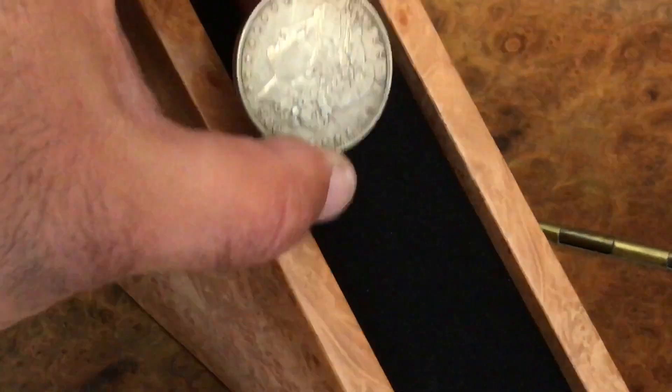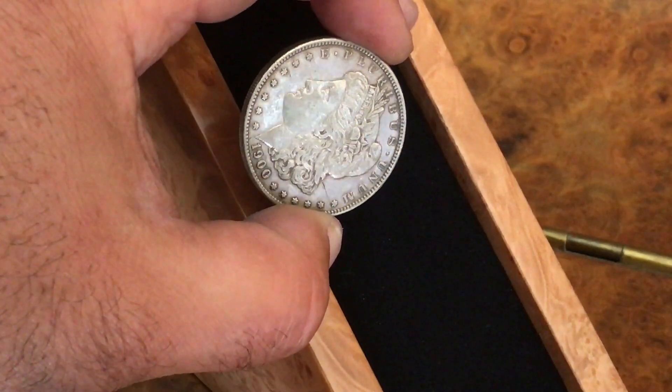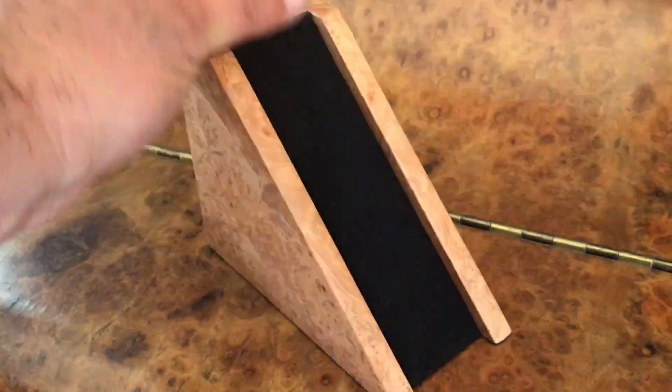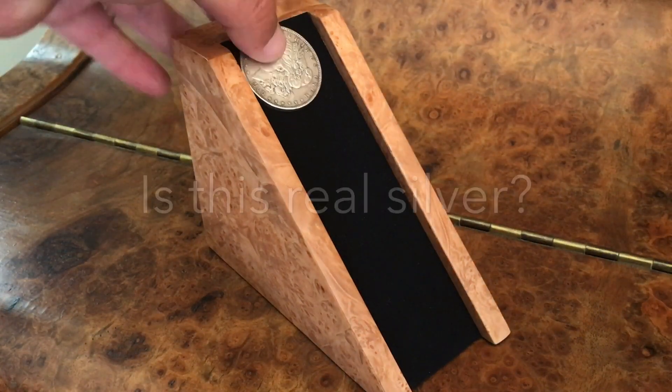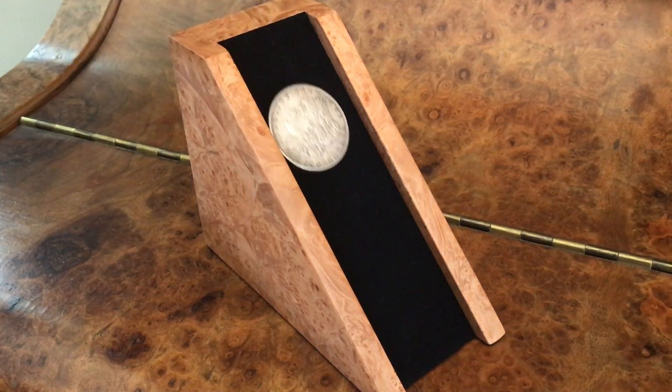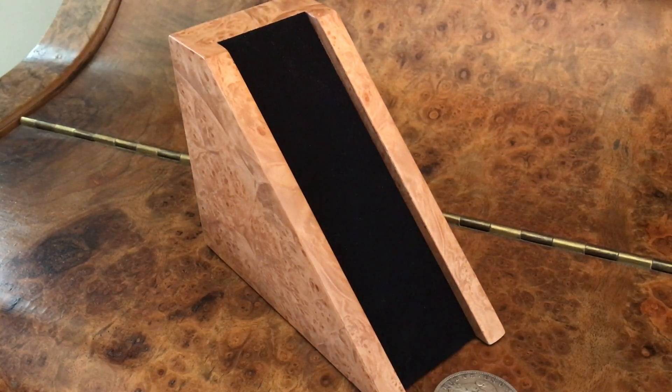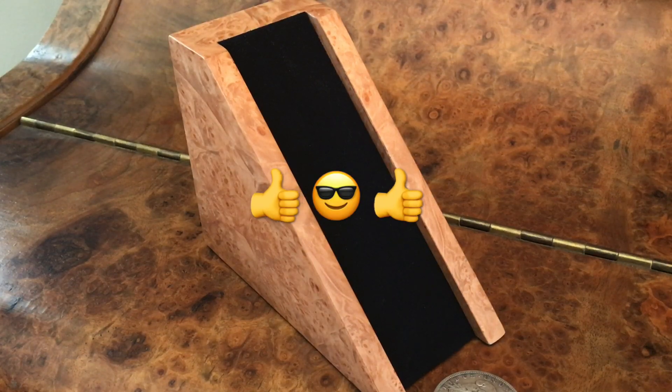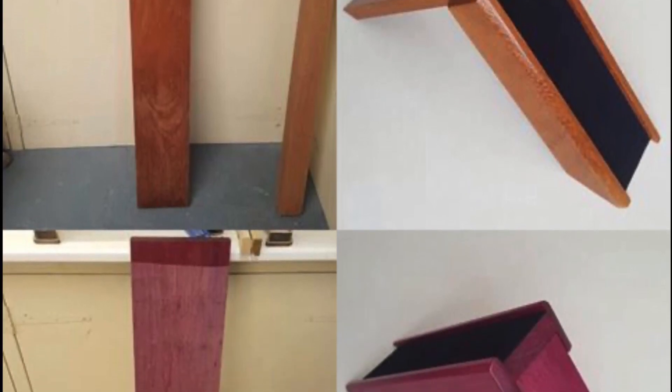This right here is just a standard 1900 Morgan silver dollar. See, if it's real it'll go slow. Very nice. Cyber Curtain Twitcher, also known as CCT, makes these slides in a couple of different models.